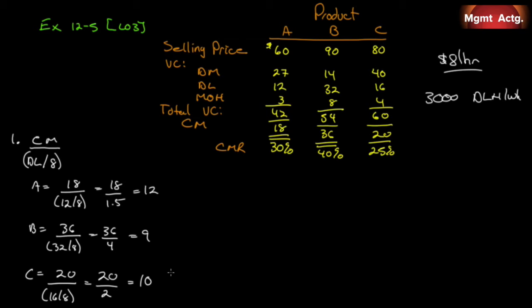Number two: which orders would you recommend the company work on next week? We rank them in order of contribution margin per hour. Work on product A first — twelve dollars per hour. If A demand is satisfied and time remains, move to product C — ten dollars per hour. Finally, work on B if time allows. Our time is limited to the three thousand hours available.